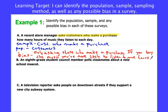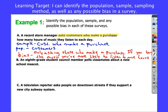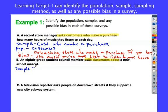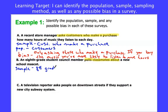For the second example: an eighth grade student council member polls their classmates about a new school mascot. The sample — who gets asked — would be eighth grade classmates. Right away that should be a red flag, because the new school mascot represents not just eighth grade students — it represents all students, and really all community members.